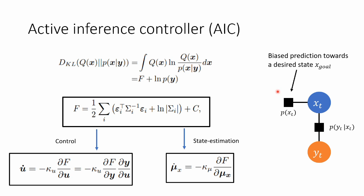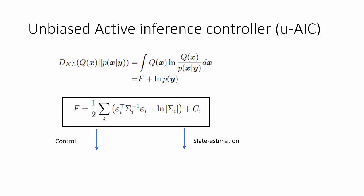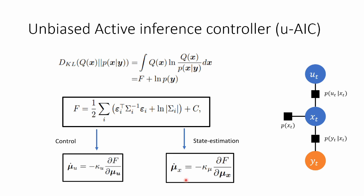So in the Active Inference controller, we had a model and then we had the KL divergence and then a quadratic free energy and then we minimized it. Now we have basically the same thing with the Unbiased Active Inference controller, just have a slightly different model. We still have the KL divergence, quadratic equation, and state estimation is still the same. But now control action can be directly minimized because we now have a control action in the model. We don't have to use a chain rule anymore.